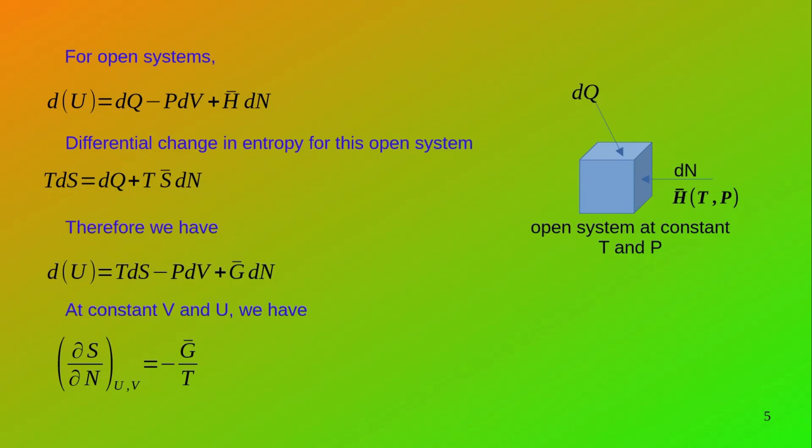For such an open system, the change in internal energy equals the heat added plus the work done on it, plus the enthalpy of the stream multiplied by the moles entering through the stream. This equation is a natural consequence of the steady-flow energy equation for the first law. A video on the steady-flow energy equation is available in the playlist if you wish to clarify those concepts.